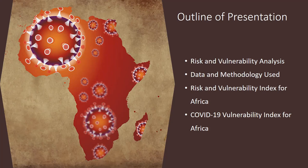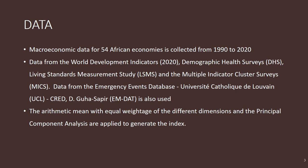When we calculated the recent vulnerability index for Africa, we used basically a macroeconomic perspective and data for 54 African economies from 1990 to 2020. The data was mainly from the World Development Indicators. We used other data sources but the same data was also used by the World Bank through the WDI. Data came from different surveys — the Demographic Health Surveys, the Living Standards Measurement Study, Multiple Indicator Cluster Surveys — and also from the Emergency Events Database to look at climate change impact of disasters.